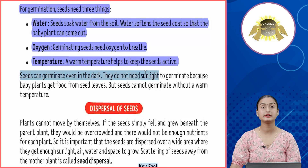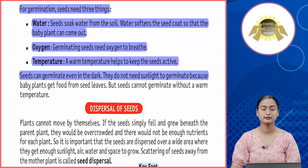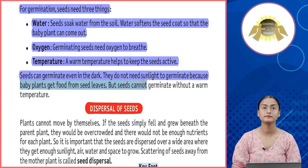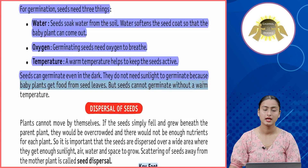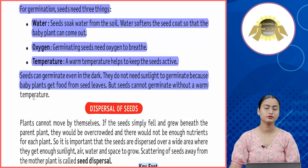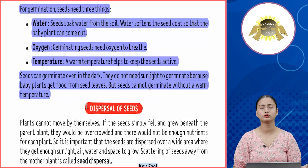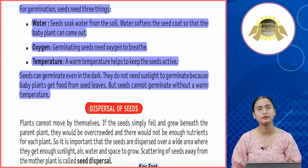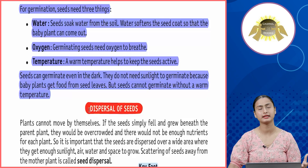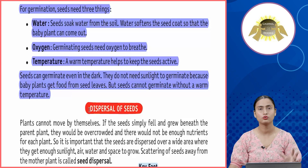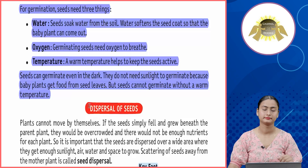Seeds can germinate even in the dark — they do not need sunlight to germinate because baby plants get their food from the seed leaves (cotyledons). However, seeds cannot germinate without a warm temperature. A small seed can grow in the dark without sunlight because it takes its nutrition from the soil.